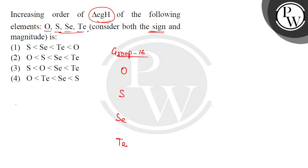Okay children, what happens in electron gain enthalpy? It is generally the amount of energy released when a neutral isolated gaseous atom accepts an extra electron.